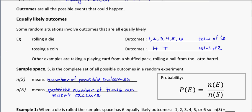And n(E) means possible number of times an event occurs. So for instance, when I'm looking at rolling a die again, if I'm thinking about even, so if we're looking at the even numbers, I have one, two, three times that I can get an even number. So if my event is even numbers when I'm rolling a die, I've got three of those out of six.